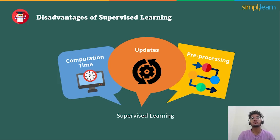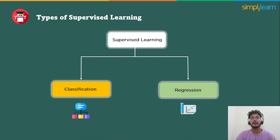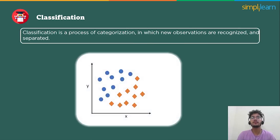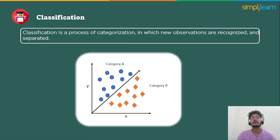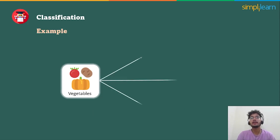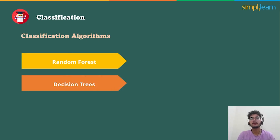Supervised machine learning can be further classified into two problems: classification and regression. Classification is a process in which new observations are recognized and separated so that they can be categorized. For example, if you have a group of vegetables, you can categorize them — potatoes in class A, tomatoes in class B, capsicum in class C. Popular classification algorithms include random forest, decision trees, logistic regression, and support vector machines.